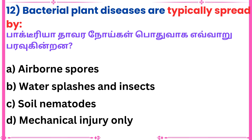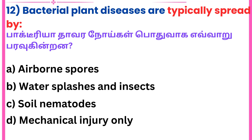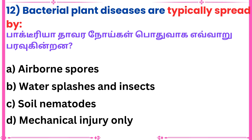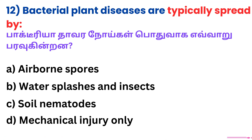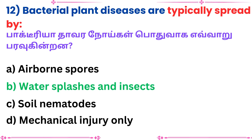Twelfth question: Bacterial plant diseases are typically spread by — Answer: Water splashes and insects.